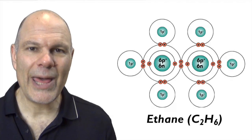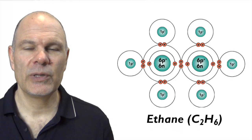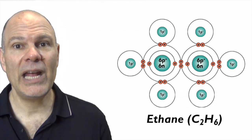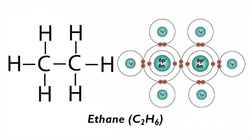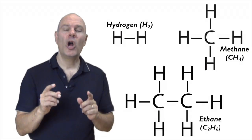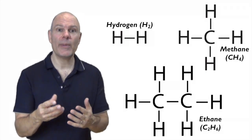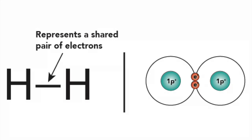Now draw the structural formula for ethane, C2H6. In ethane's structural formula, each carbon is sharing electrons with three hydrogens, and each carbon shares a pair of electrons with the other carbon. The three molecules discussed so far — hydrogen, methane, and ethane — are held together by single covalent bonds, meaning atoms are connected by a single shared pair of electrons, represented by a single dash.